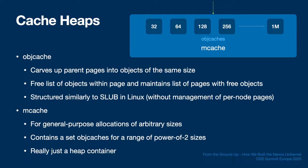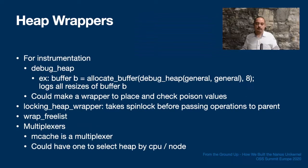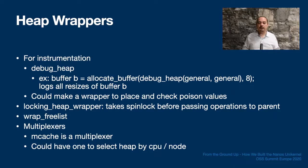To finally make a general-purpose heap for serving allocations of arbitrary sizes, we have the mcache heap, which contains objcaches for a range of power-of-two sizes. This is typically what is used for general allocations. Such a heap is really a container or wrapper, as it does little more than pass allocation requests onto heaps that do the actual work.